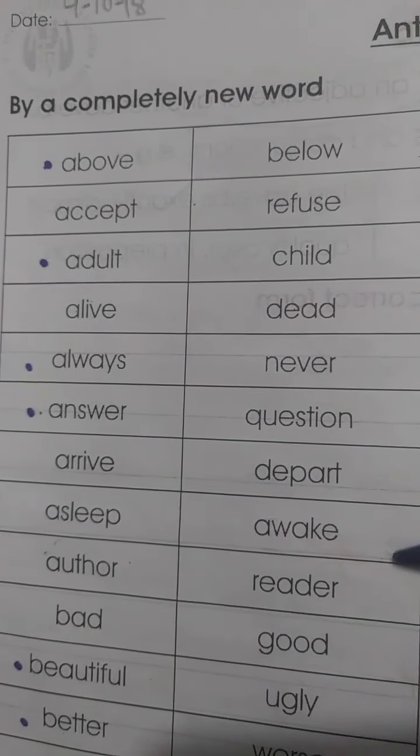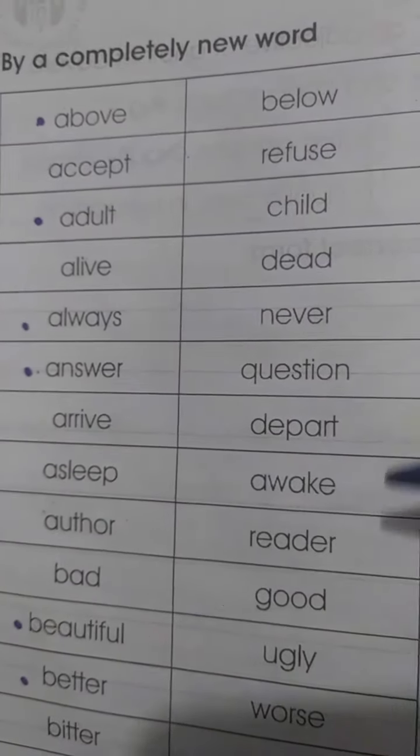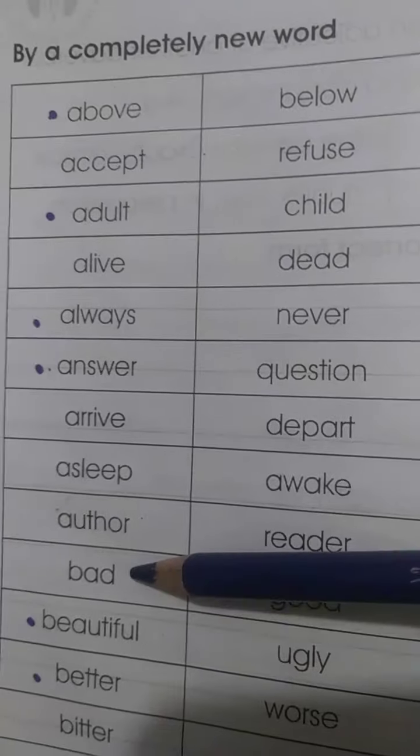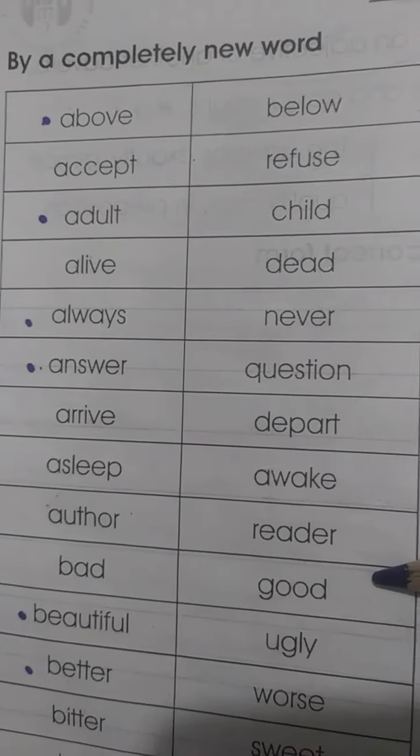'Awake' — yianni jaga hua, meaning awake. 'Author' — likhnye wala, meaning the one who writes. 'Reader' — pardhne wala, meaning the one who reads. 'Bad' — bura. 'Good' — acha.